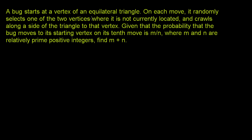A bug starts at a vertex of an equilateral triangle. On each move, it randomly selects one of the two vertices where it is not currently located and crawls along a side of the triangle to that vertex. Given that the probability that the bug moves to its starting vertex on its 10th move is m over n, where m and n are relatively prime positive integers, find m plus n.